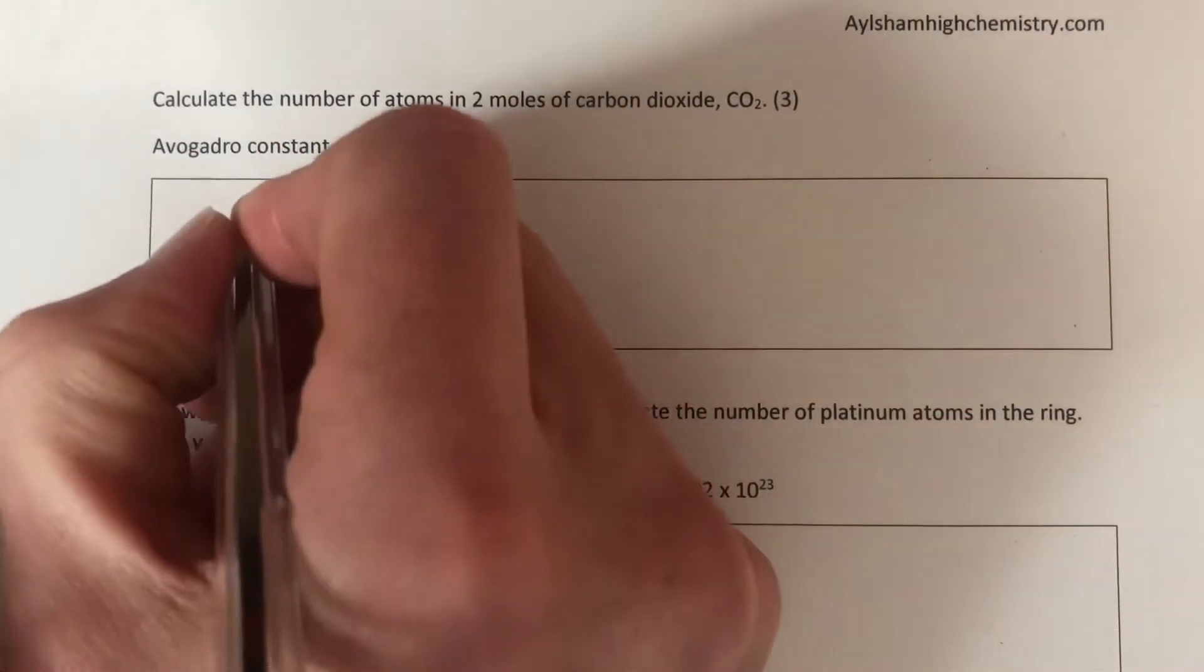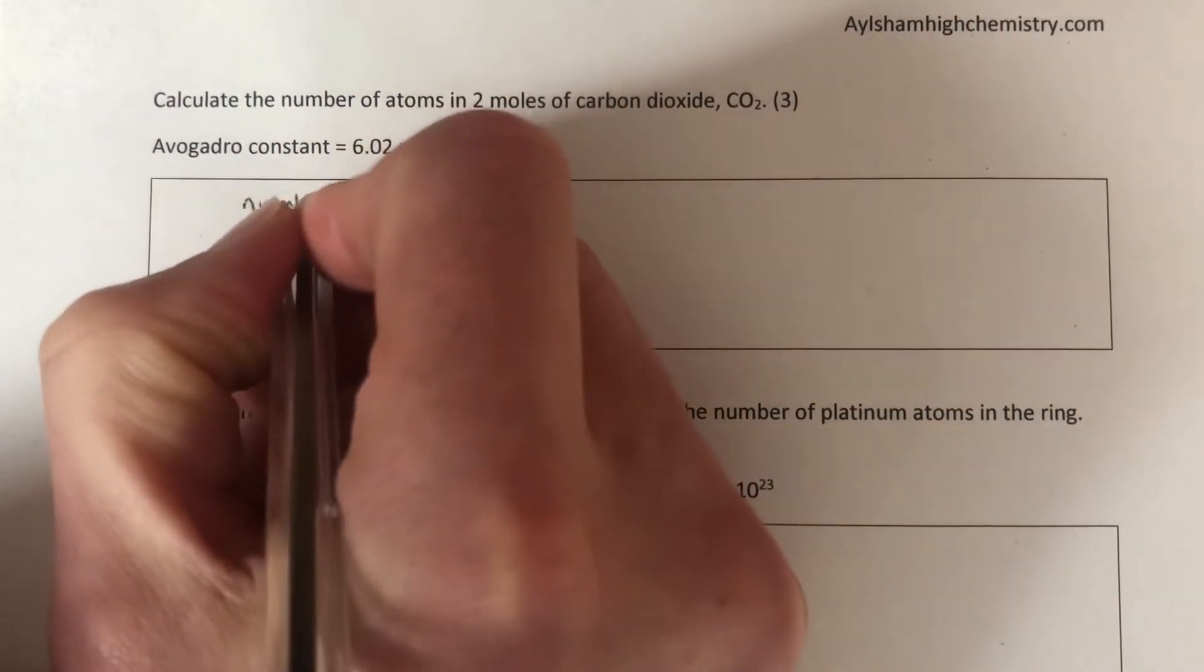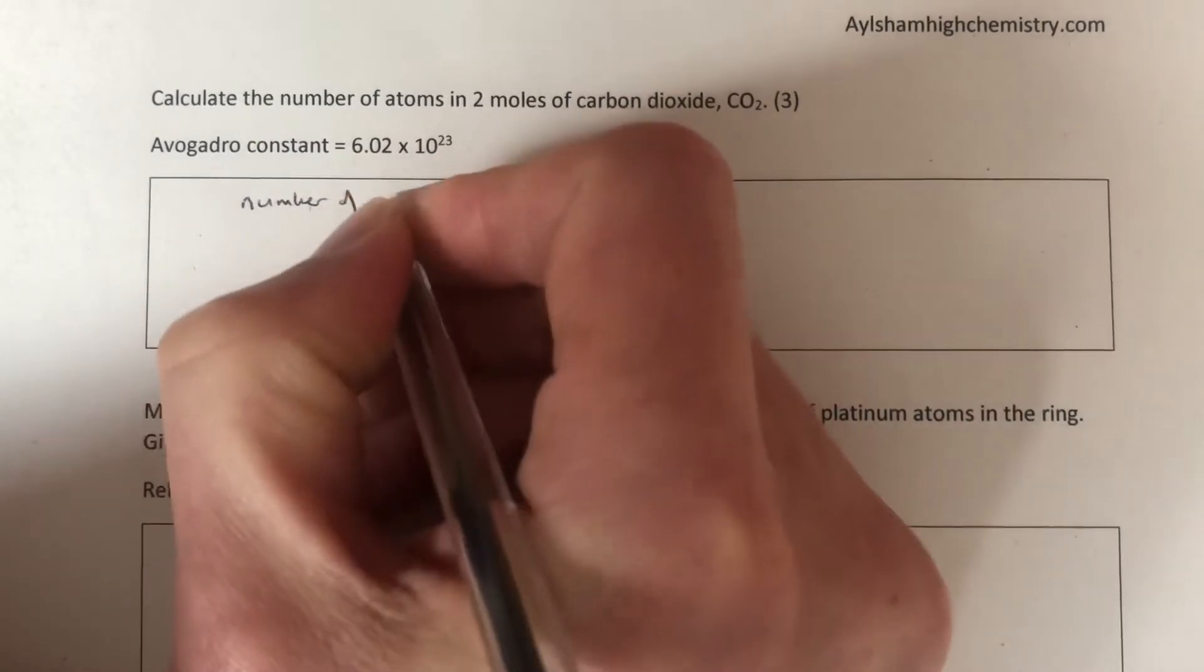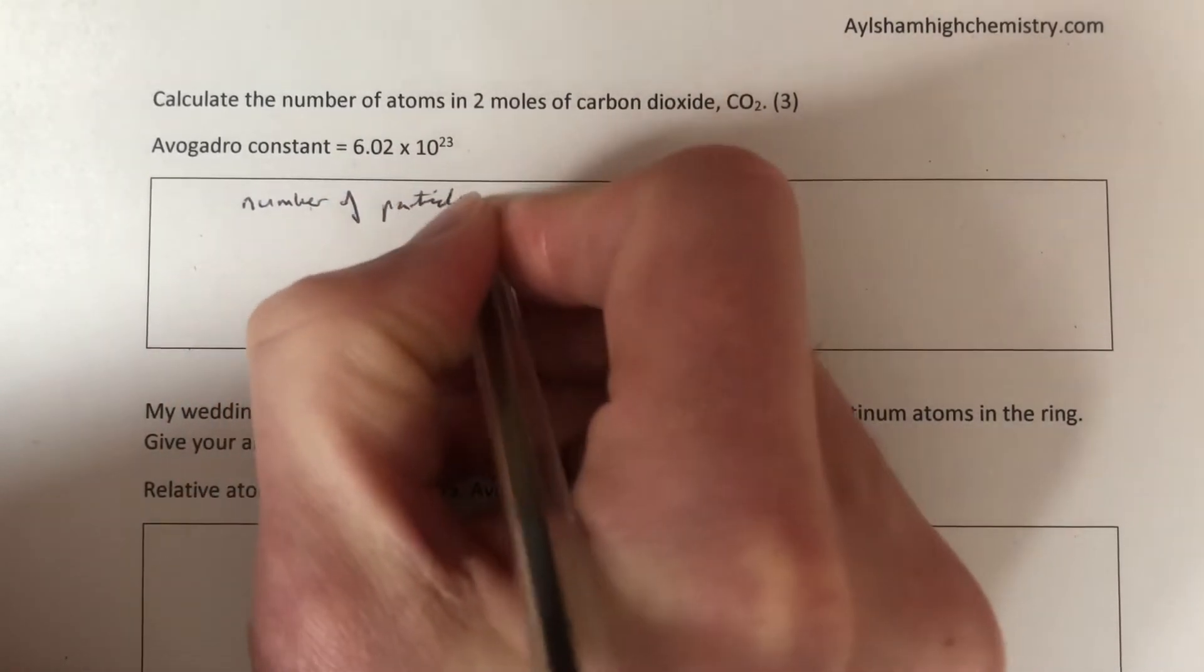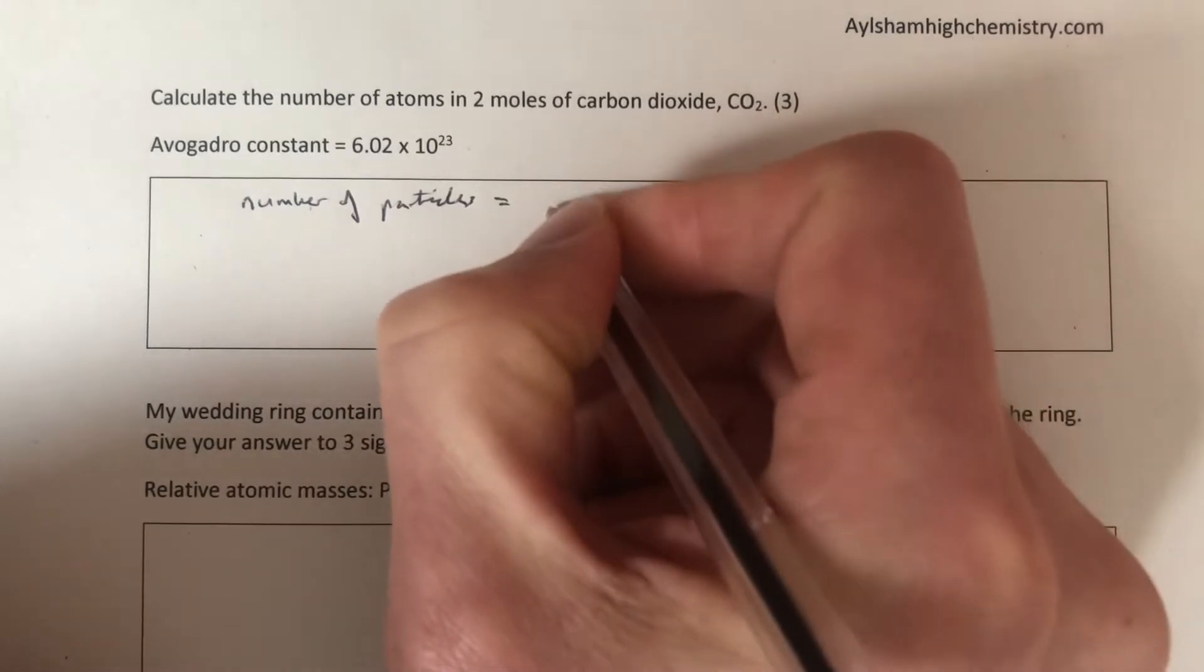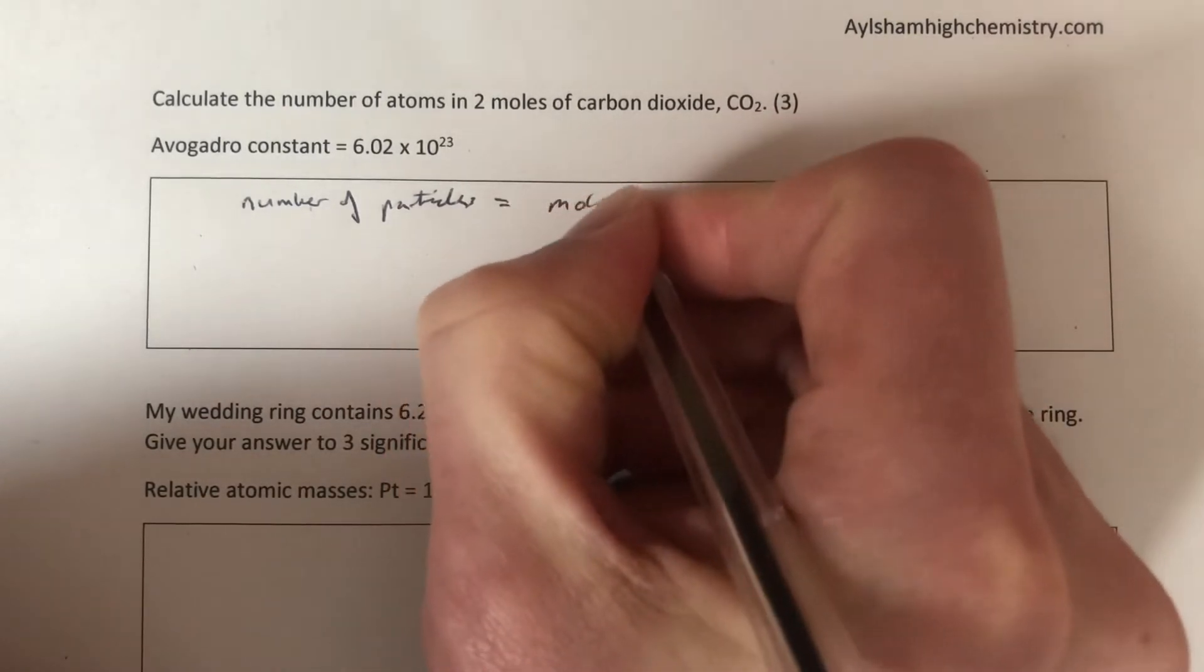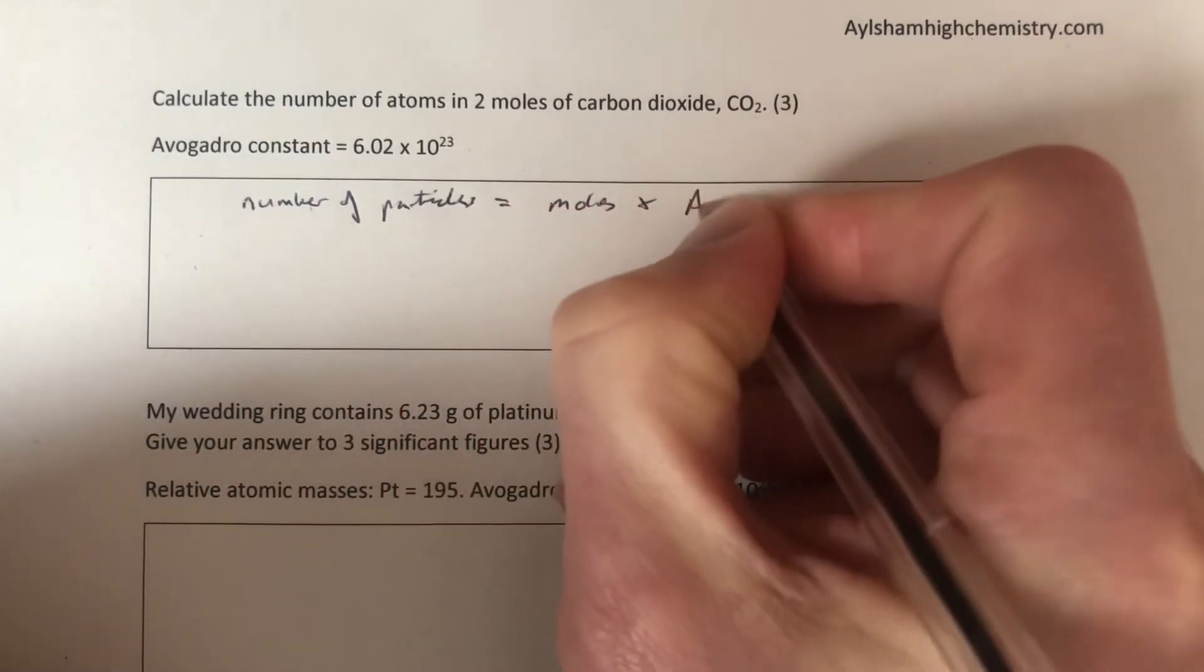If you want a formula, it's always good to learn a formula. Number of particles equals the moles times the Avogadro constant.